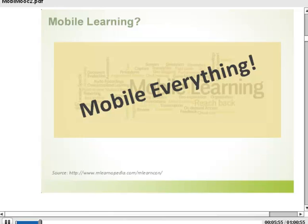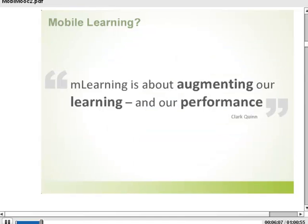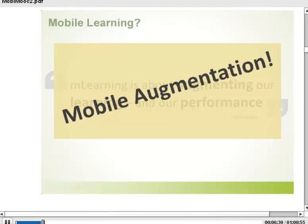In simple terms, what you can achieve on mobile in your organizations is much, much more than what you can possibly define in just the term mobile learning. The other key principle we discussed was from Clark Quinn's book Designing M-Learning: mobile learning is about augmenting our learning and our performance. When you're looking at it from the corporate perspective, the key principle is mobile augmentation. So two key principles: mobile everything and mobile augmentation — and with those two we'll move forward into what we wish to discuss today.